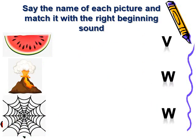Okay, look at this picture. I want you to say the name of each picture and match it with the right beginning sound. So we have watermelon, volcano.